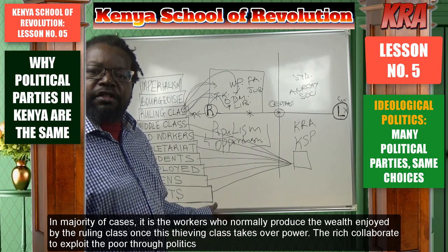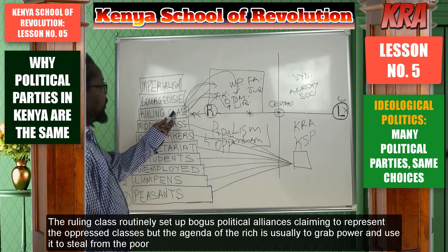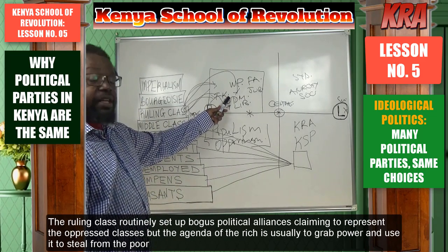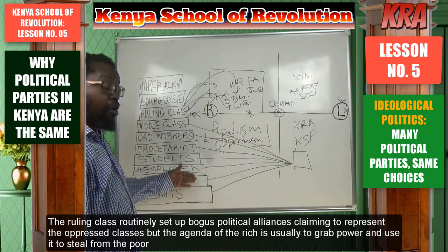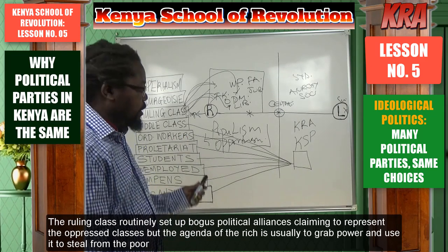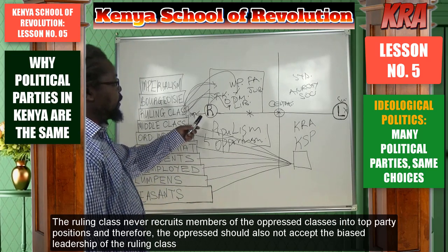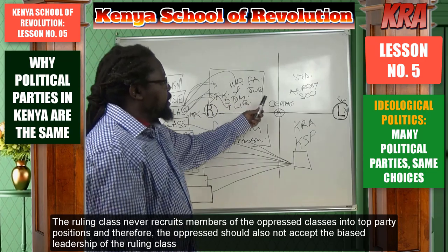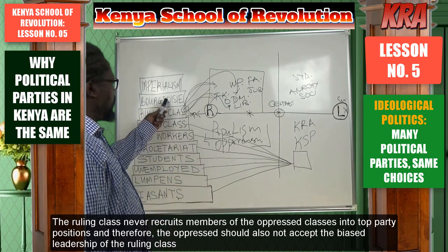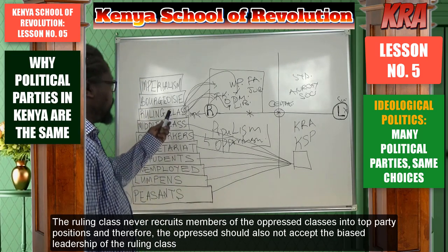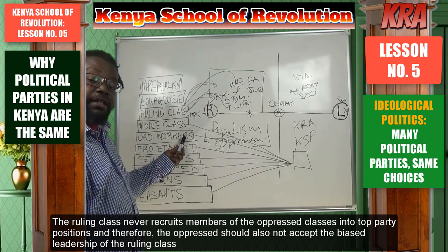Politics is about wealth distribution. Wealth is already being produced by all these people. But the problem is the ruling class, with their own parties, sit in parliament and decide the fate of all these people. In the majority of cases, the common people are normally the losers after they send the ruling class to parliament. The difference between these right-wing parties and the left-wing parties is the leadership.